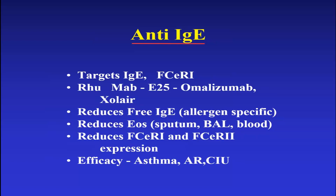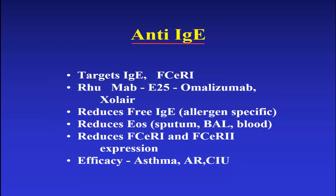Our first biotherapeutic for asthma was anti-IgE — omalizumab. It had a moderate effect, not in all individuals but in many. It has clearly had efficacy in asthma, probably influences allergic rhinitis, and has acquired another indication for chronic idiopathic urticaria where it seems to work even better than in asthma. The mechanism likely relates to reduced IgE-Fc receptor expression on mast cells, turning down inflammation in both asthma and urticaria.